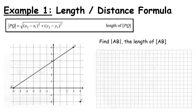Let's get into Example 1. We're going to look at the length or distance formula. You can think of this in two ways: it gives the length of a line segment, or the distance between two points. Notice the notation — |AB| with two straight lines — is the symbol for length. It's important to recognise what you're being asked even without the label written beside it. The first thing we're going to do is take the points A and B.